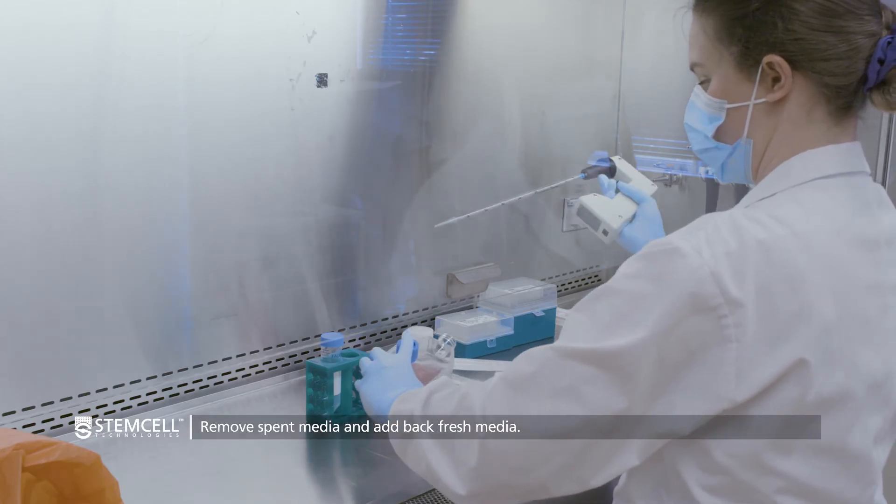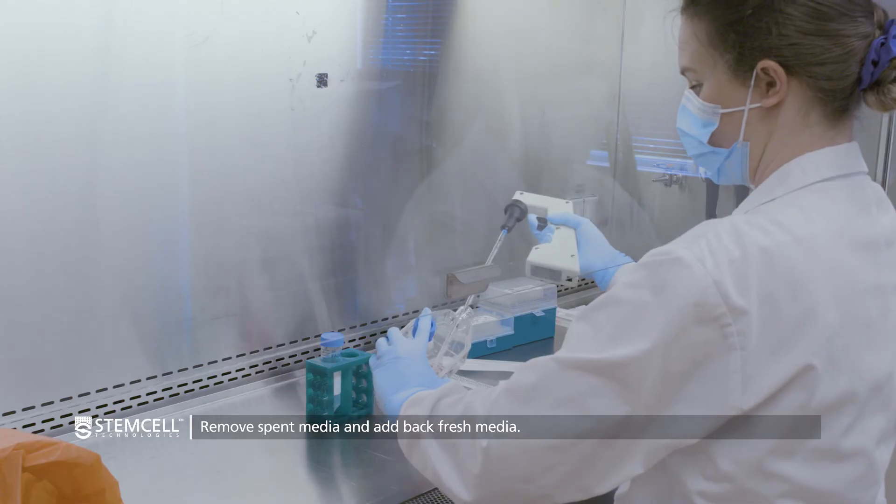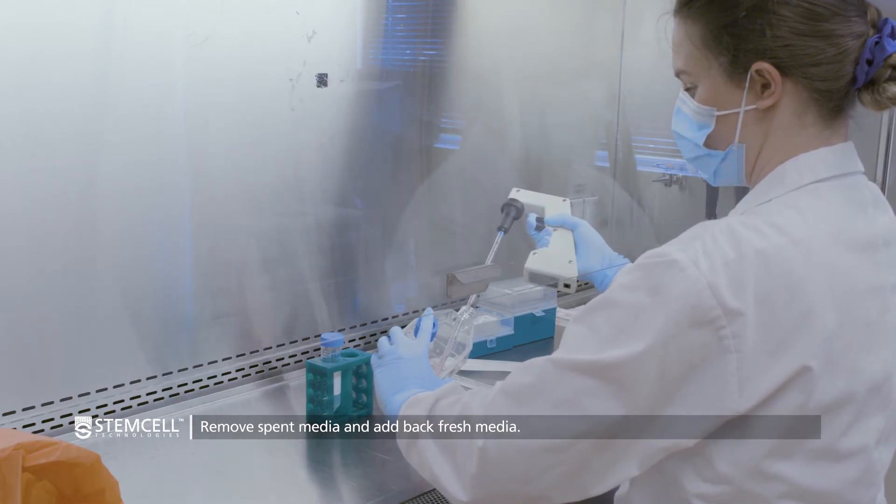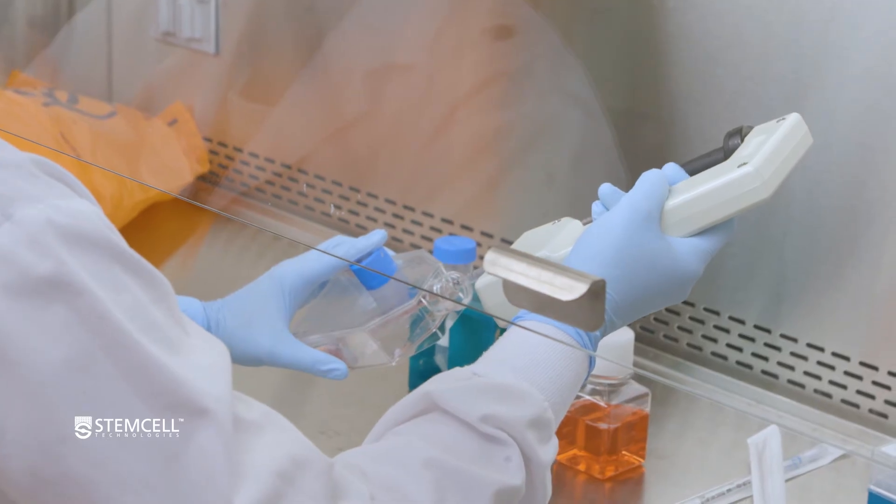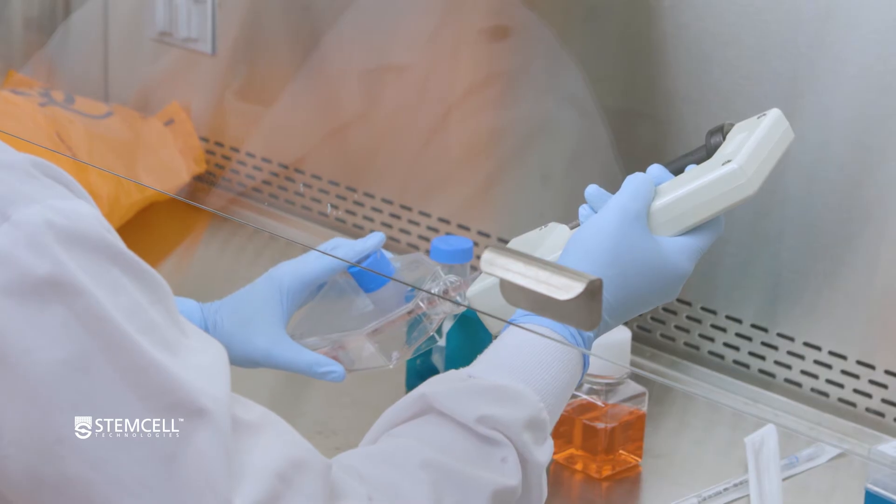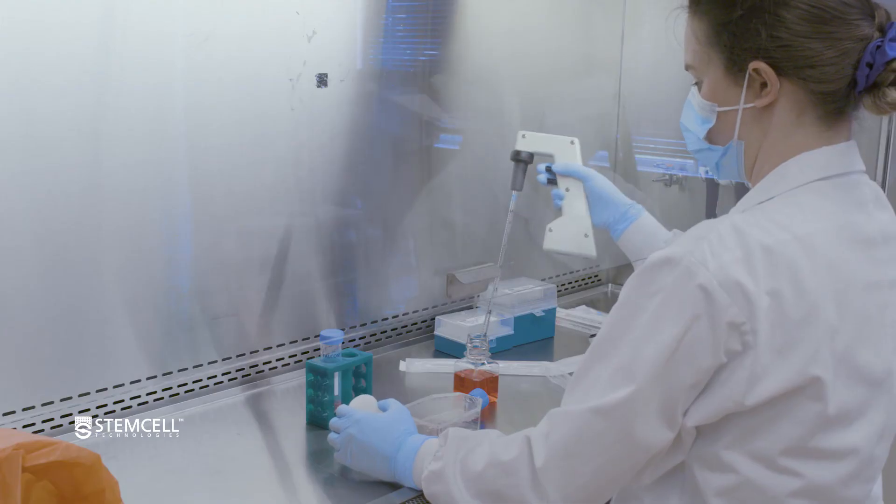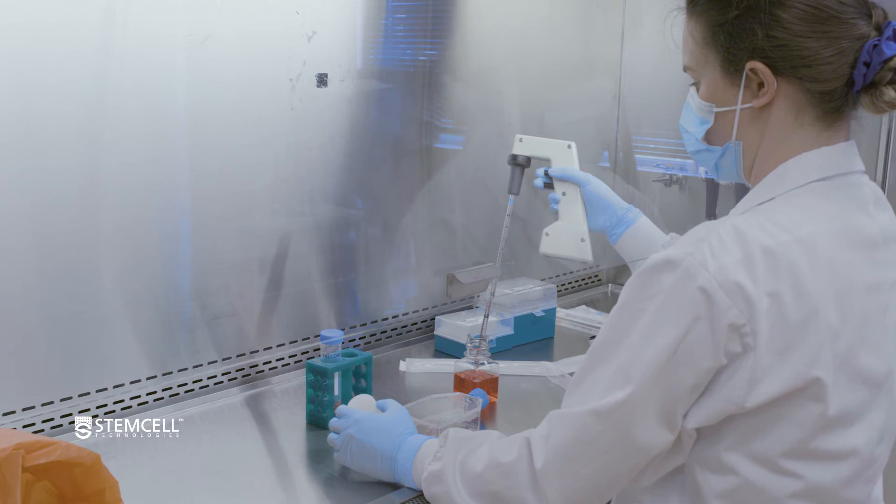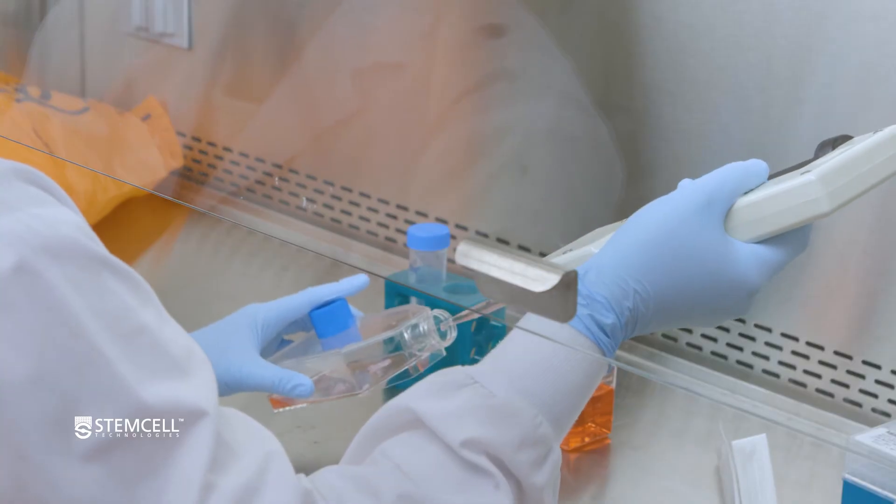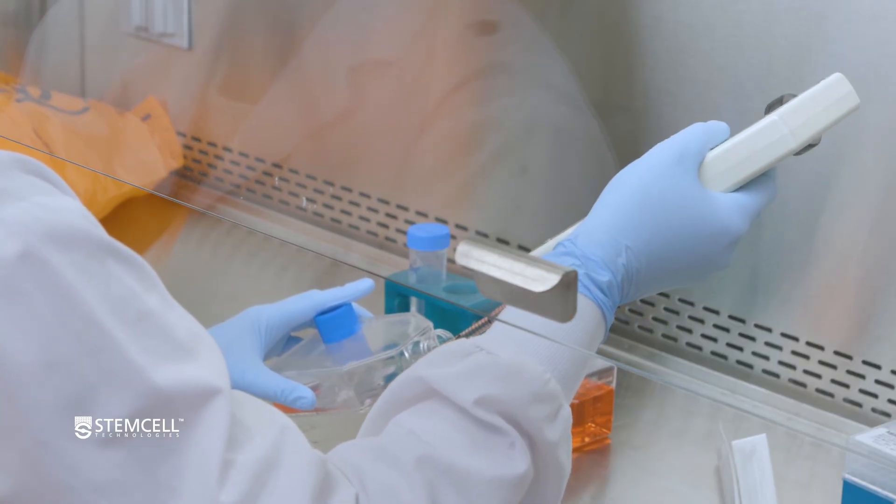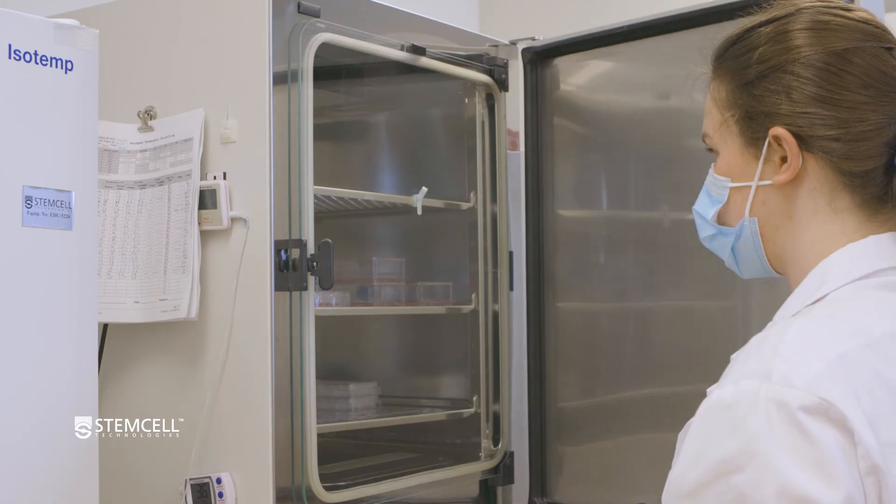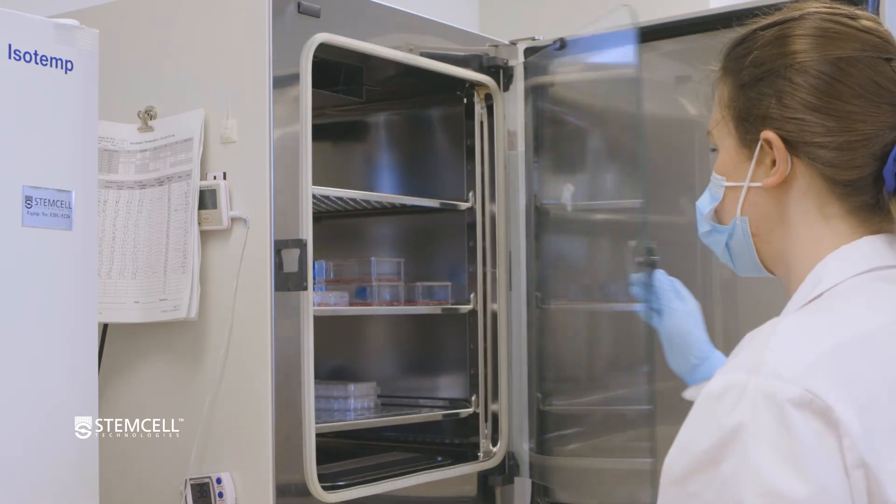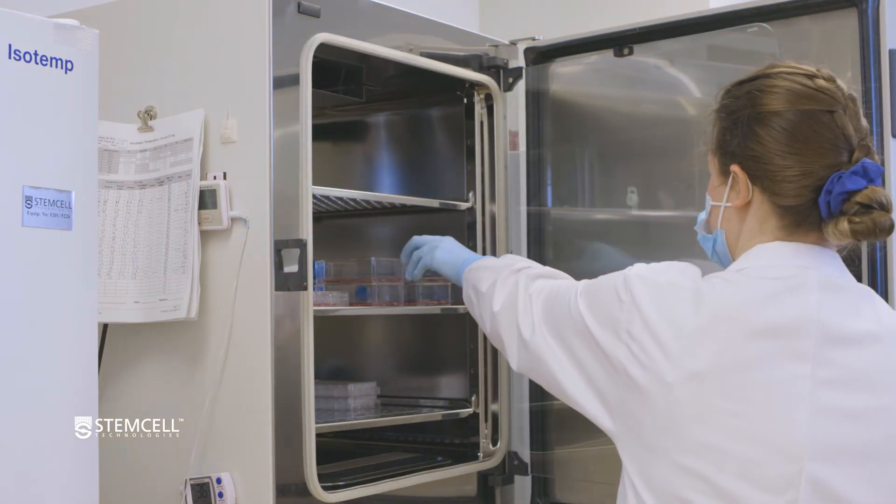To perform a half-medium change, tilt the flask back to pool the media. Then remove 4 ml of spent media without disturbing the attached tissue. Some unattached tissue pieces may be removed in this process, but this is normal. Slowly add 5 ml of fresh MesenCult ACF Plus umbilical cord medium. Incubate undisturbed at 37 degrees Celsius for another 5 to 7 days.